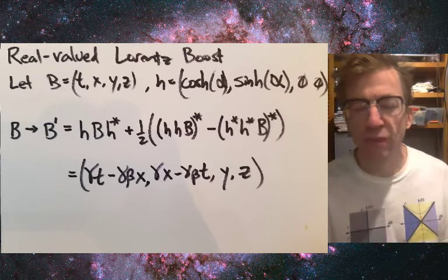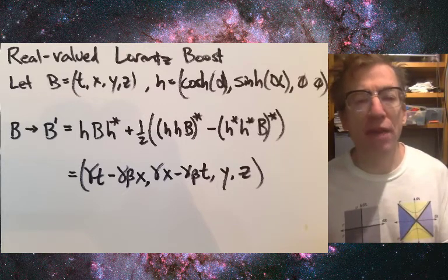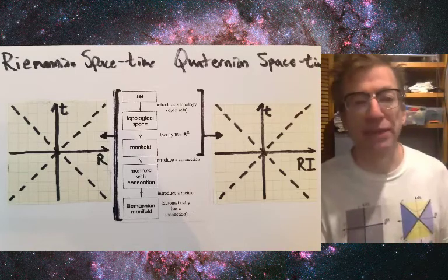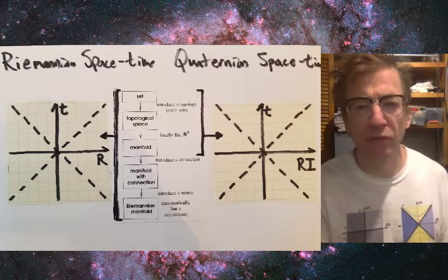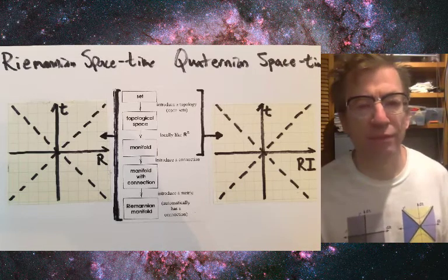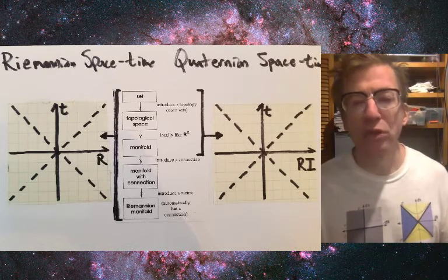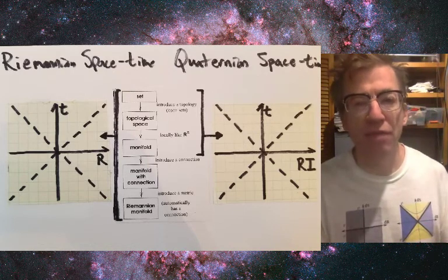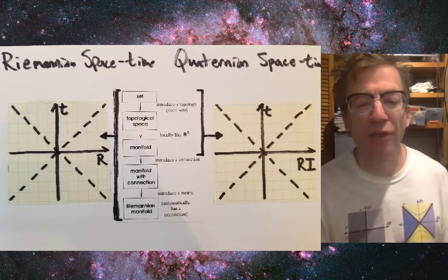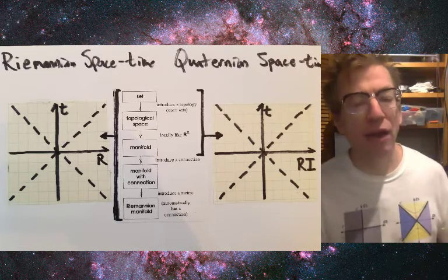But my theory really works on modifying how we think about space-time. We think about it using Riemannian space-time. I took this graphic from Sean Carroll's lecture notes on general relativity where you start with a set, you construct a topological space, you get a manifold, and then you have to add a connection which shows how the different neighboring portions of space-time have a relationship to each other. You then introduce a metric and when you do that you end up with this Riemannian manifold.